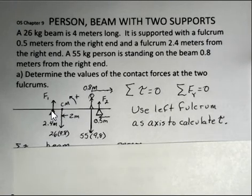And I'm going to choose to put the axis of rotation at the left fulcrum. You can put it at the right fulcrum just as well. But one of those two would be the convenient choice. By putting the axis of rotation at the left fulcrum, F1 will have 0 torque.